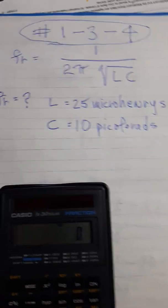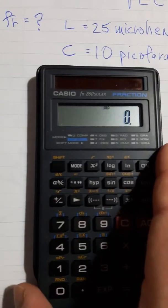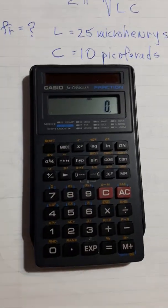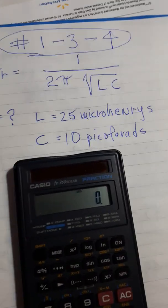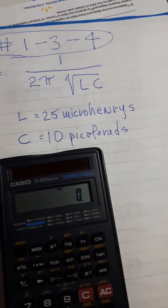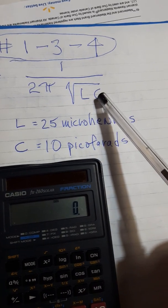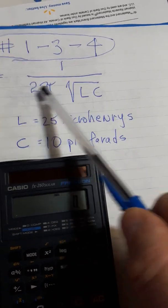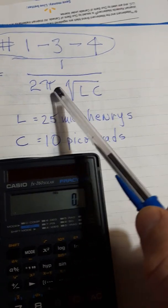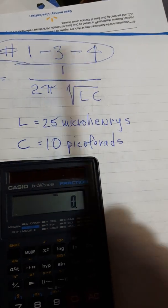I'm going to show you on this Casio calculator how easy and quick these calculations are. So first, I'm going to multiply L times C, take the square root, then multiply by 2π, which is 6.283, take 1 over that, and there's your answer.